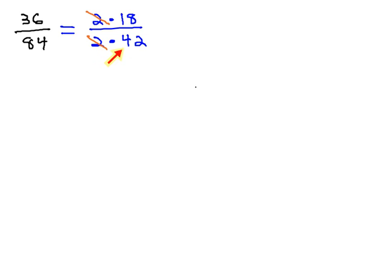We can look at this 18 over 42 and notice we still have some common factors. 18 and 42, both being even, still have a common factor of 2. So let's factor that common factor of 2 out. 18 is 2 times 9, and 42 is 2 times 21. And again, we can see that common factor of 2 dividing out, and we're just left with the fraction 9 over 21.